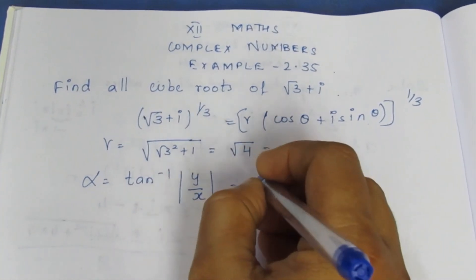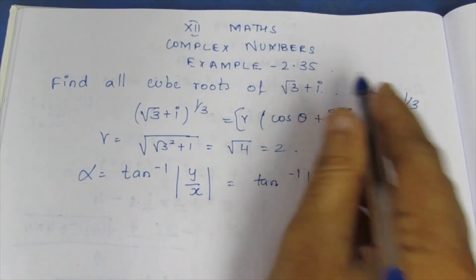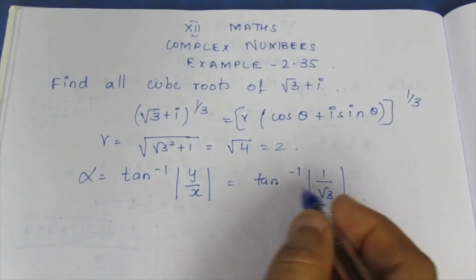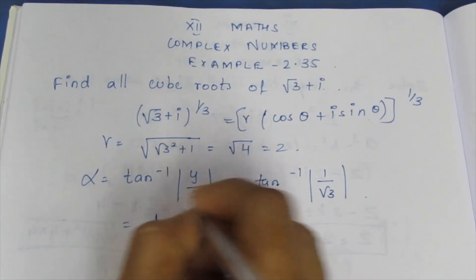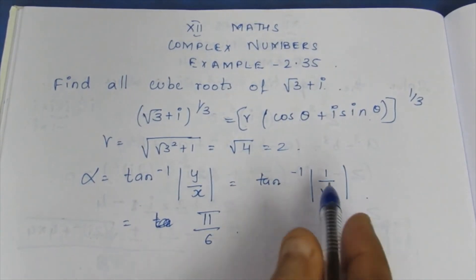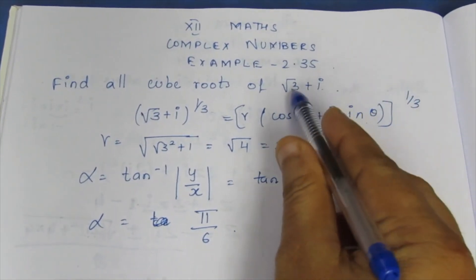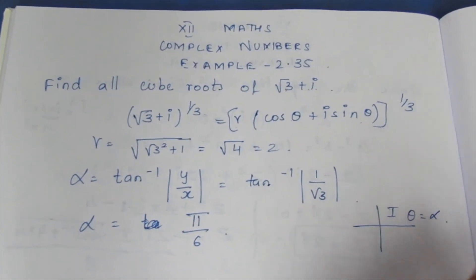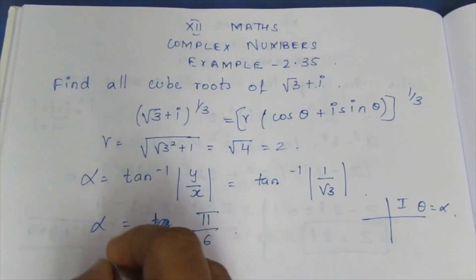Taking tan inverse of y over x, we get tan inverse of 1 over √3, which equals π/6. So alpha = π/6. Since both the real part √3 and imaginary part 1 are positive, this is the first quadrant. Therefore theta is equal to alpha, and the theta value is π/6.